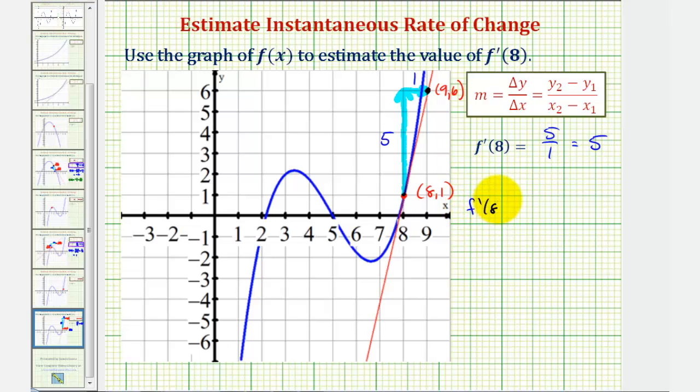f'(8) is equal to, if we call these coordinates (x₁, y₁), and these coordinates (x₂, y₂), y₂ minus y₁ will be six minus one. And x₂ minus x₁ would be nine minus eight. Giving us the same result of five divided by one, or five.